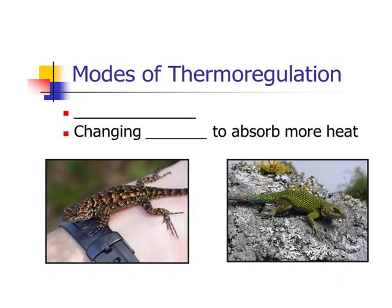Modes of thermoregulation include changing body color to absorb more or less heat. When an animal is a darker color, it will absorb more heat; when lighter in color, it absorbs less heat. In the diagram you can see a darker lizard and a greenish lighter lizard illustrating this difference.